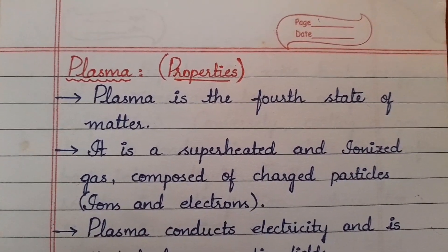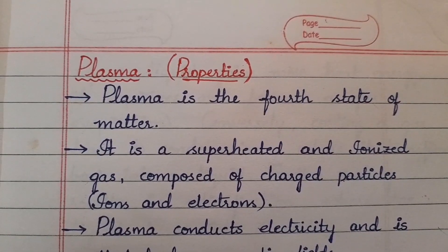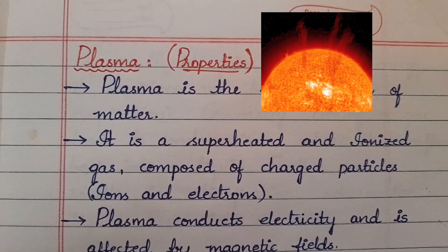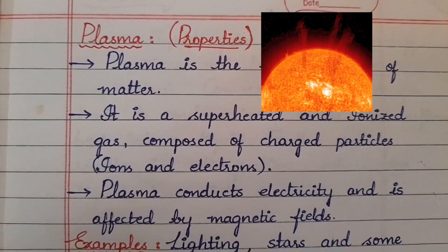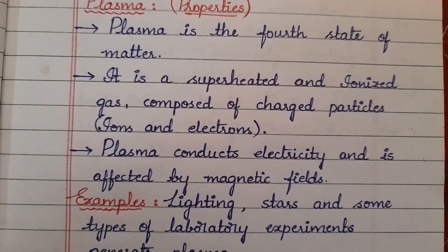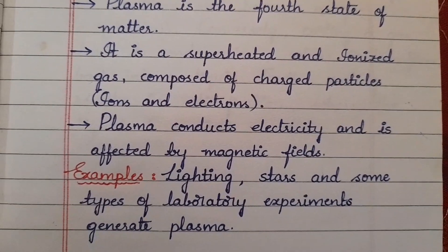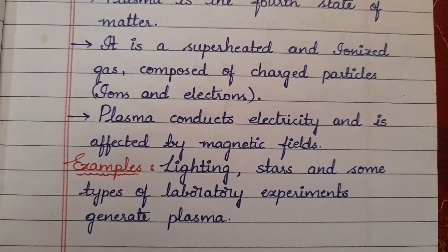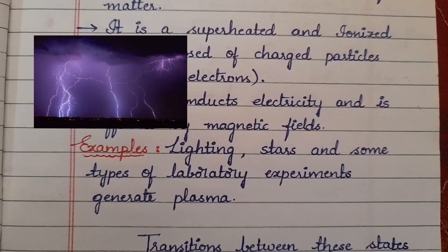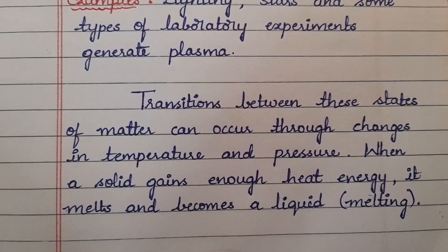Coming to the fourth one, plasma. Plasma is called the fourth state of matter. It is a superheated and ionized gas composed of charged particles like ions and electrons. Plasma conducts electricity and is affected by magnetic fields. Examples of plasma include lightning, stars, and some types of laboratory experiments that generate plasma.